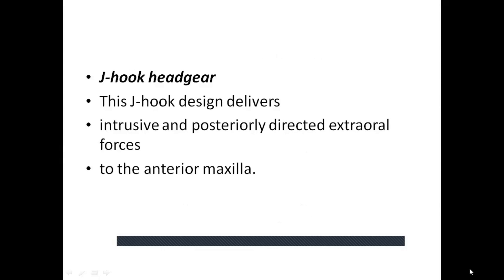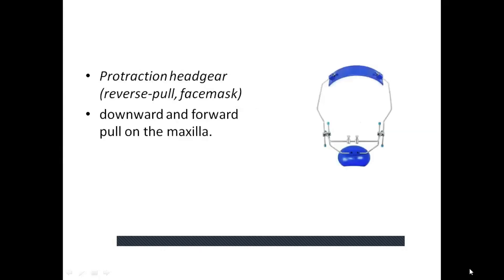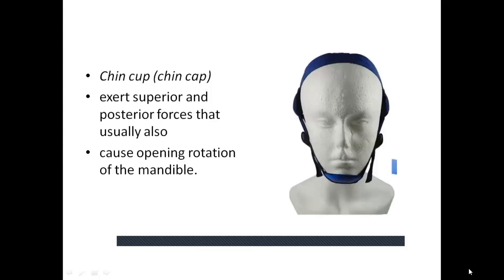The J-hook headgear attaches to hooks on the anterior arch wire, delivering intrusive and posteriorly directed extra-oral forces to retract canines and incisors. The protraction or reverse headgear (face mask) is used for Class 3 malocclusion with maxillary deficiency; it uses two pads on the forehead and chin connected by a midframe, with elastics exerting a downward and forward pull on the maxilla. The chin cup corrects Class 3 malocclusion from excessive mandibular growth by restraining or redirecting mandibular growth with superior and posterior forces.